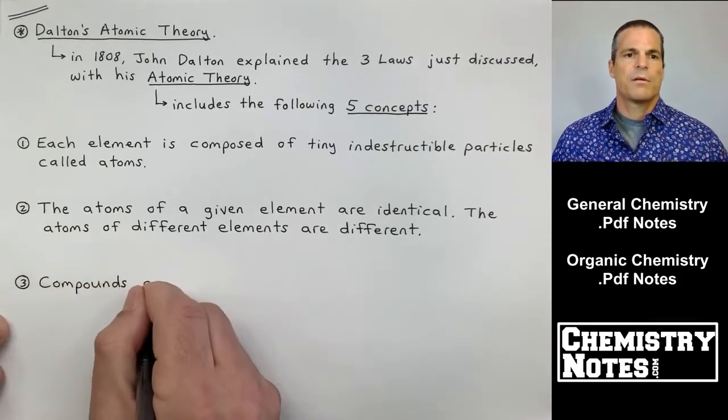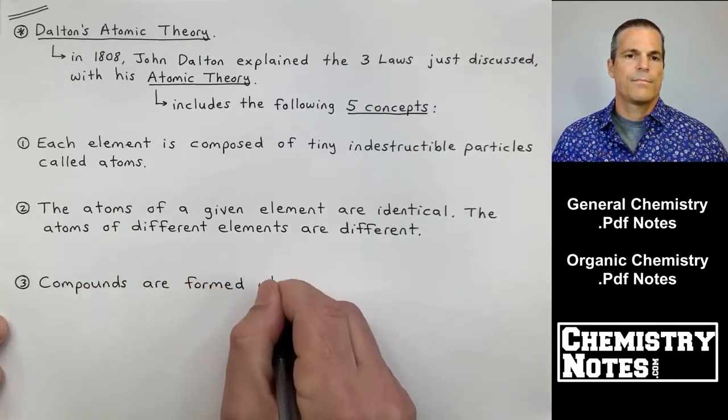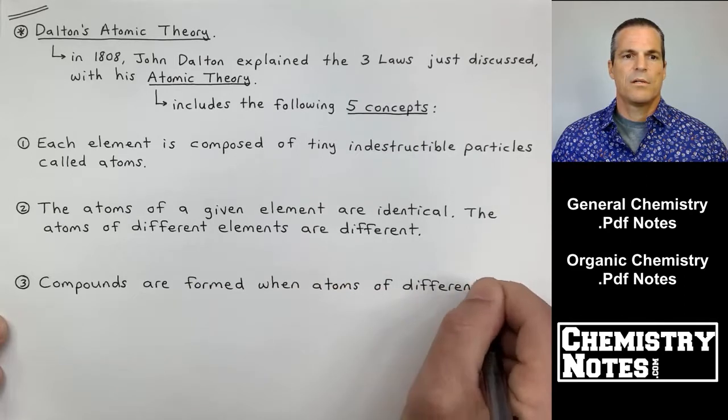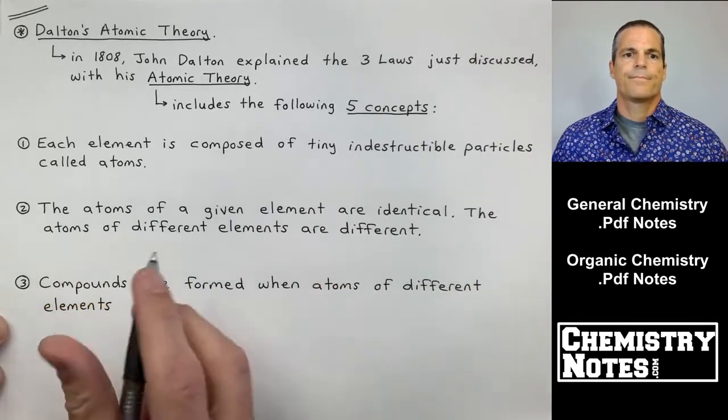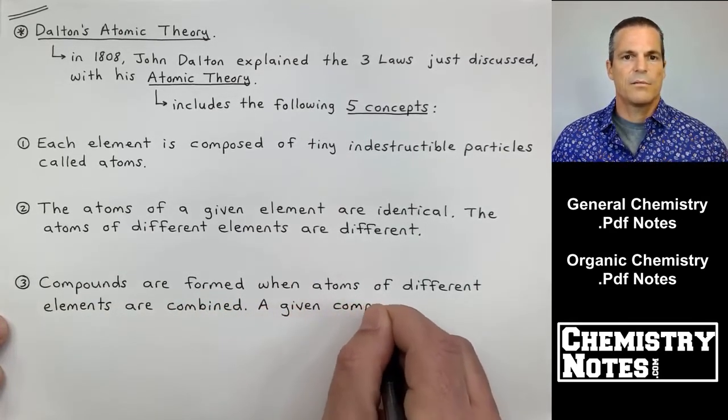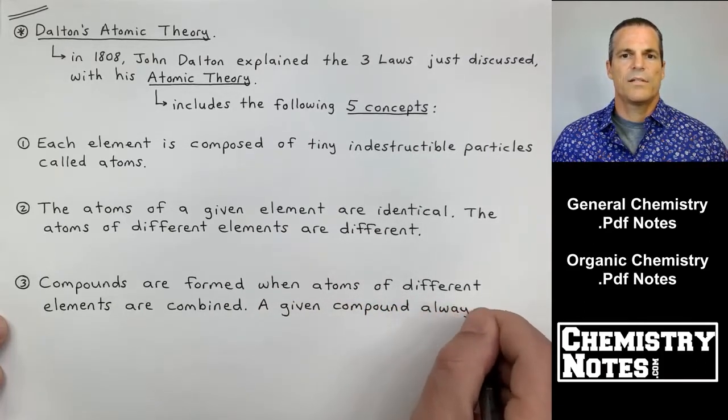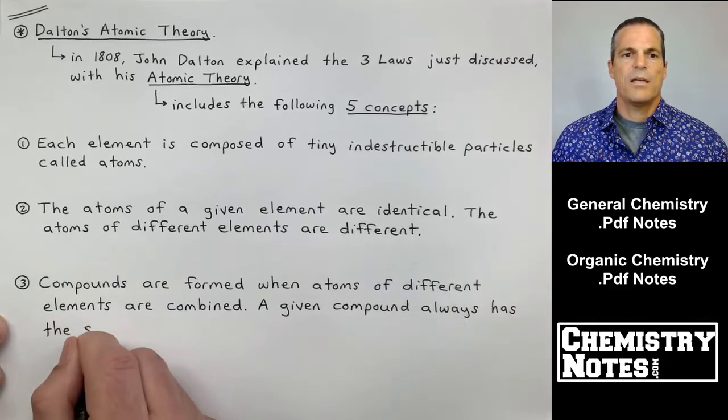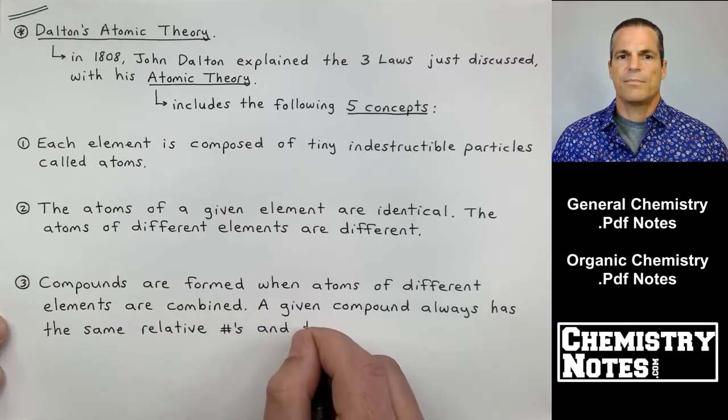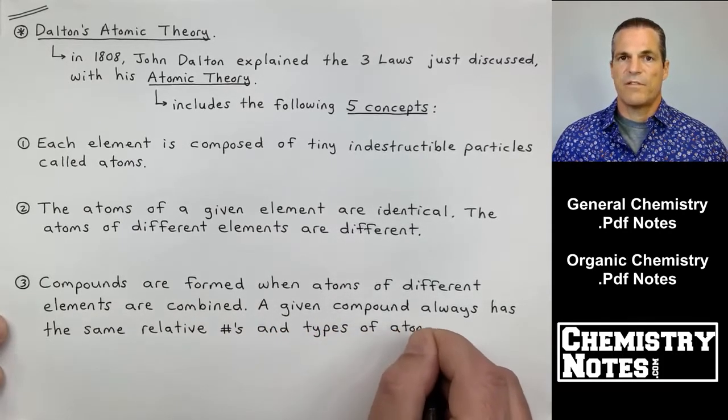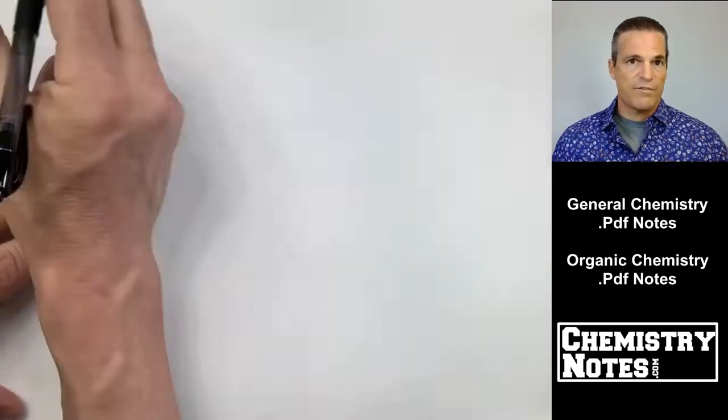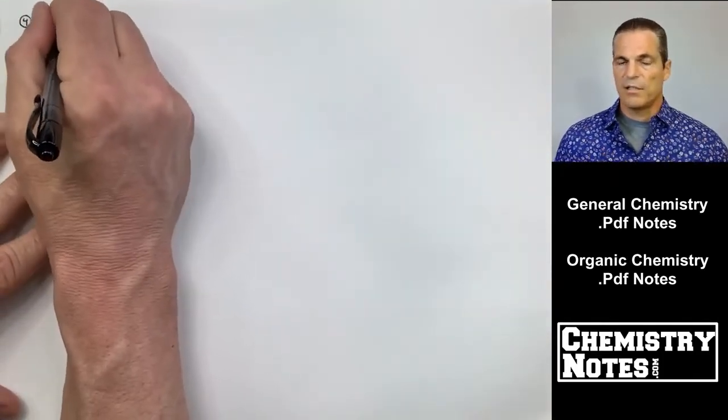Concept number three, compounds are formed when atoms of different elements are combined. A given compound always has the same relative numbers and types of atoms. That's the law of definite proportions. Number three is the law of definite proportions being summarized.